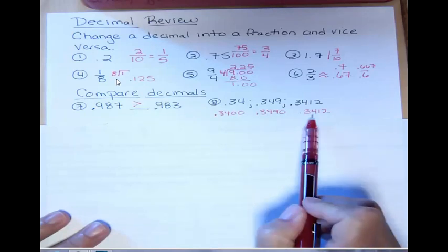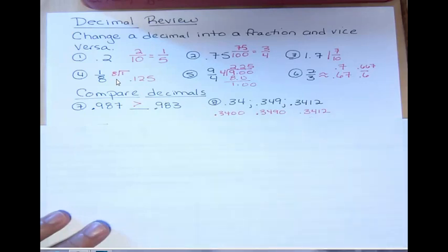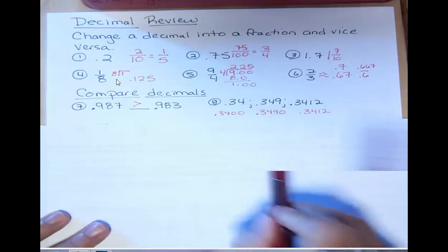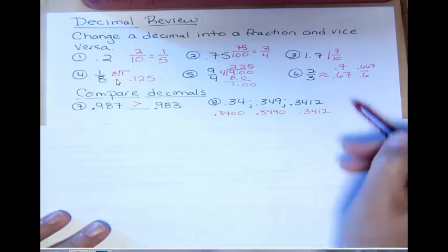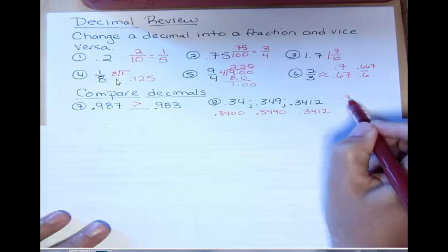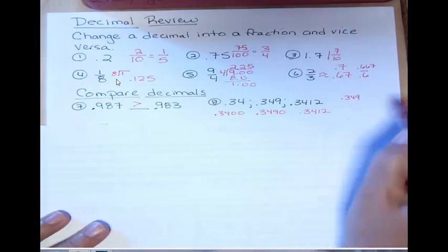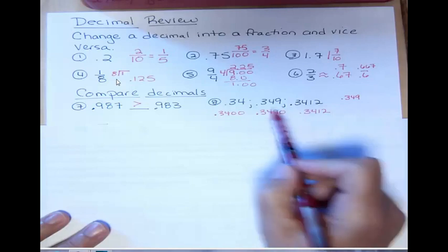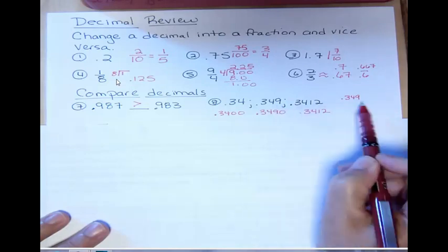Well, the greater number is 3490. That's the highest amount. So if you were asked to arrange that from greatest to least, 3490 is the most. Since we didn't have a zero on it when we first saw it, I'll put it back in its original form.